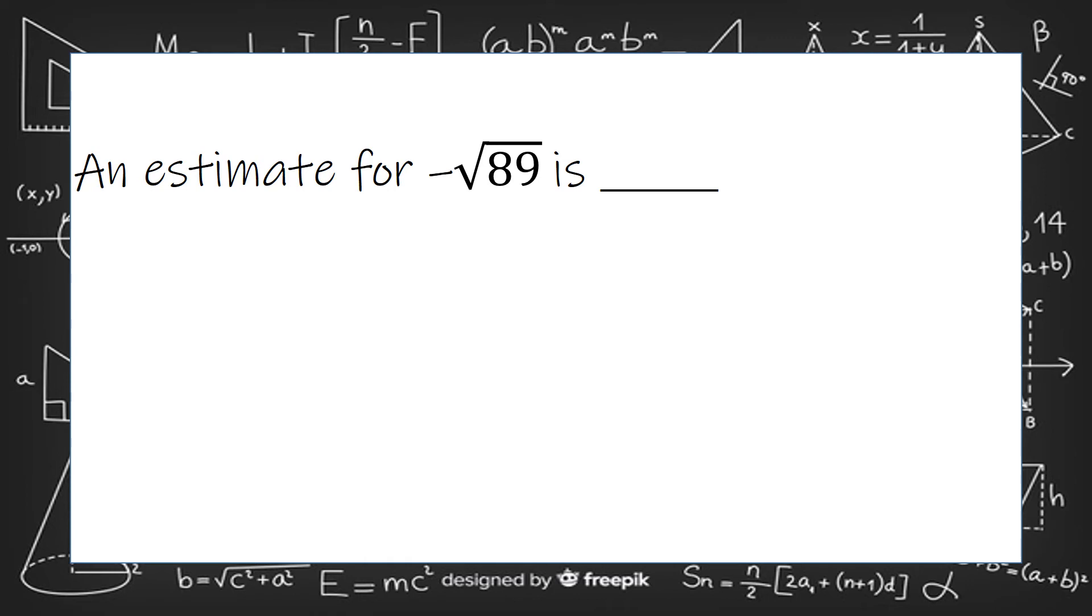An estimate for negative square root of 89 is the square root of 89. So first we need to figure out what two square roots this is between for perfect squares.